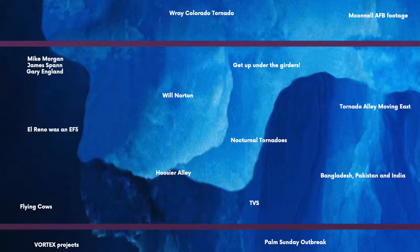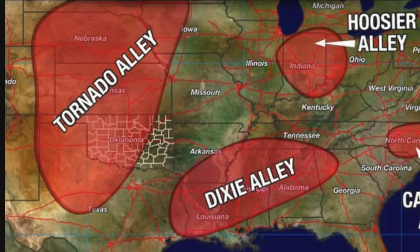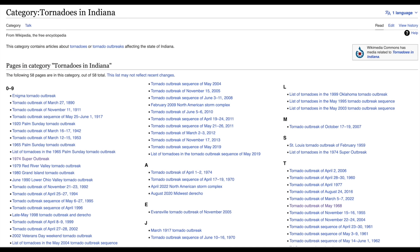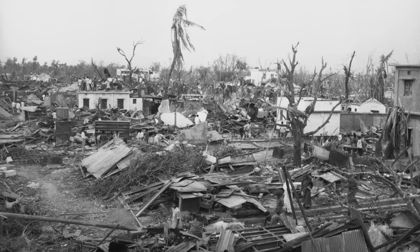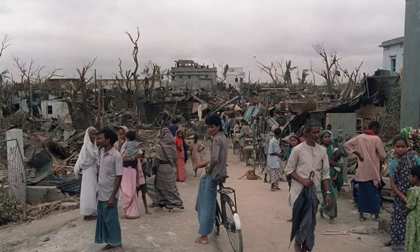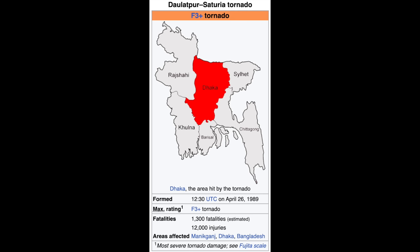Indiana gets its fair share of tornadoes and has its own alley — Hoosier Alley — kind of in between traditional Tornado Alley and Dixie Alley. Bangladesh, Pakistan, and India refers to the idea that other than the U.S., there seems to be another major tornado hotspot near eastern India, Bangladesh, and Pakistan. In fact, the deadliest tornado of all time killed over 1,300 individuals — occurring in 1989.